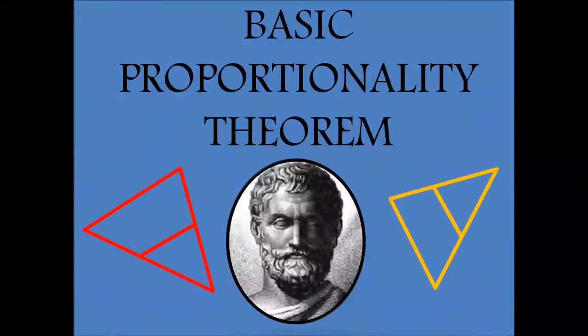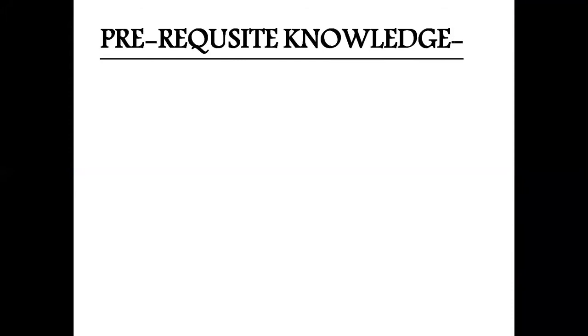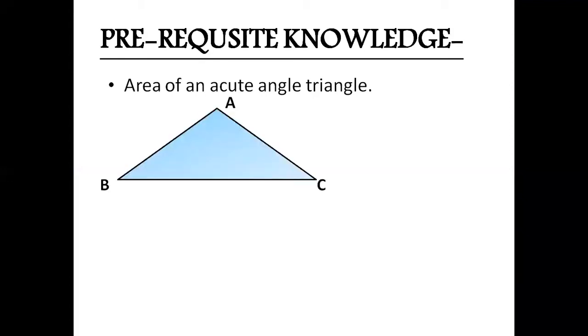To understand this we need to have some prerequisite knowledge. First, area of an acute angle triangle. Let us take an acute angle triangle ABC. Its area is equal to half into BC as base into AD which is perpendicular to the base.